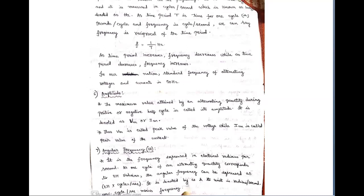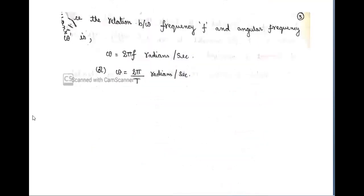The next term is angular frequency, which is expressed in electrical radians per second. Since one cycle of an alternating quantity corresponds to 2π radians, the angular frequency can be expressed as 2π times cycles per second. It is denoted by omega (ω) and its unit is radians per second. The relation between omega and frequency f is: ω = 2πf radians per second. We can also say ω = 2π/T radians per second.